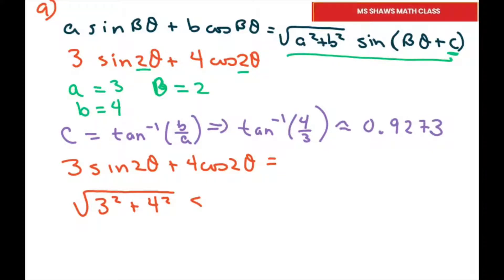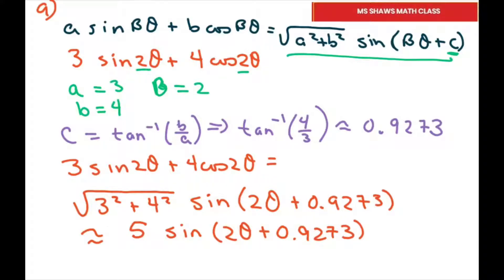And then we have sine of our big B, which is 2 times theta plus C. And C is 0.9273. So this equals approximately 5 times sine of 2 theta plus 0.9273. And we wrote our expression.